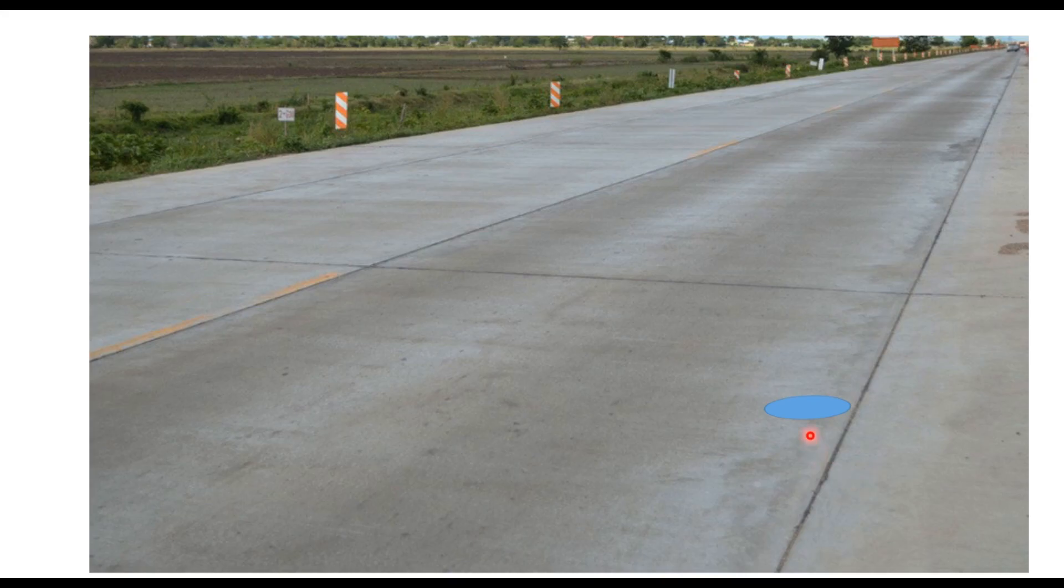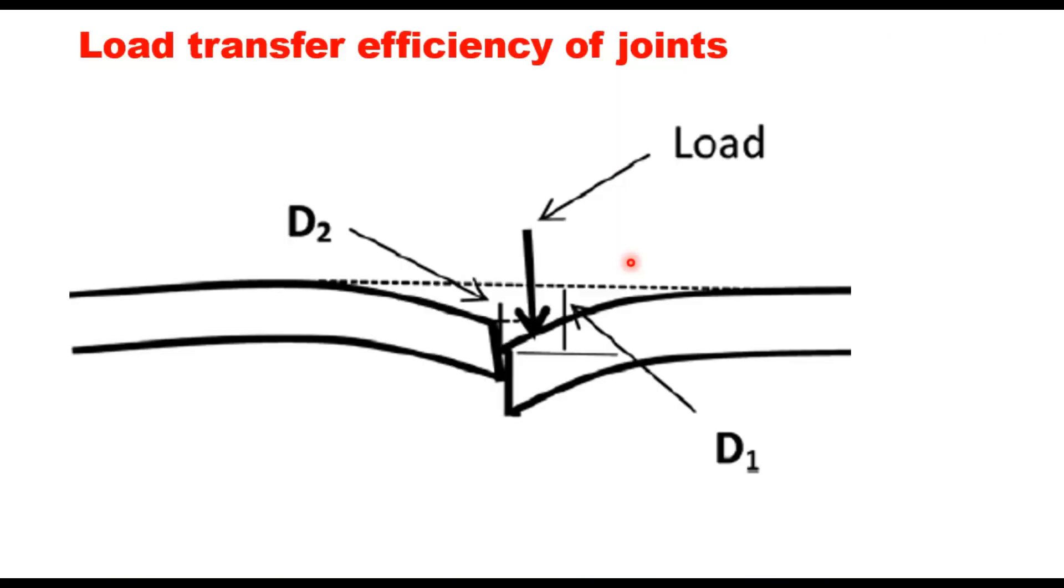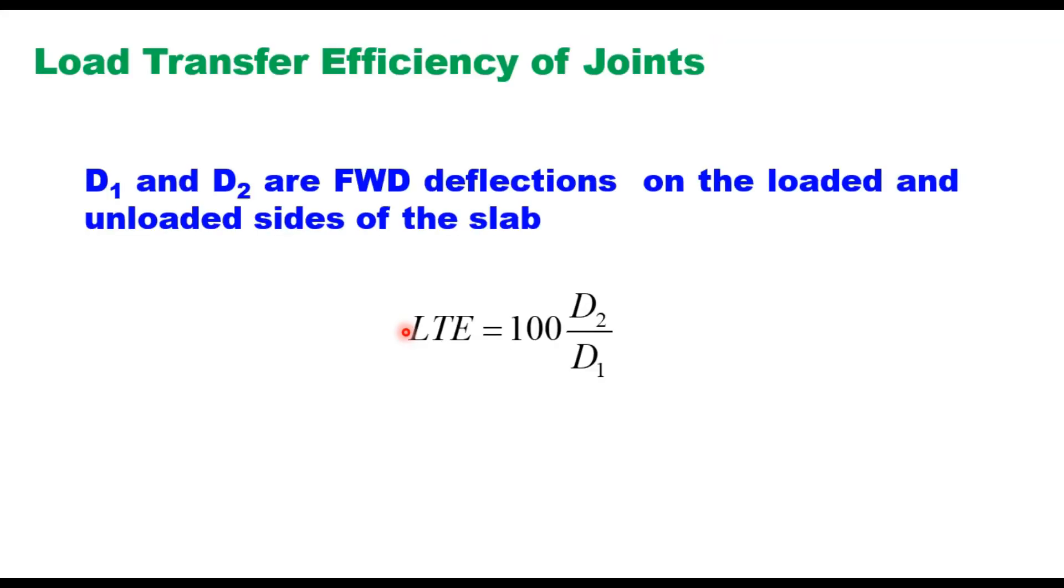When testing efficiency of dowel bars, then this plate should be placed at the edge of the slab. And the sensor should be placed on both the slabs. One on the loaded slab, another on the unloaded slab. So one slab is loaded and the next slab is unloaded. And we record the deflection in both the slabs. D1 is the deflection in the loaded slab and D2 is the deflection in the unloaded slab. Then load transfer efficiency of the joint can be estimated using this equation D2 upon D1.